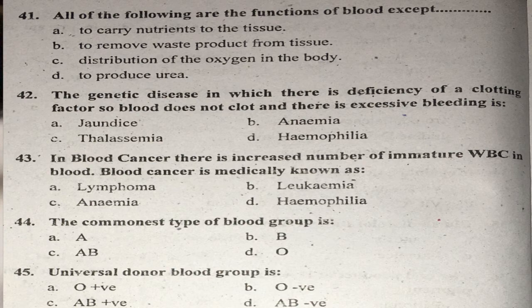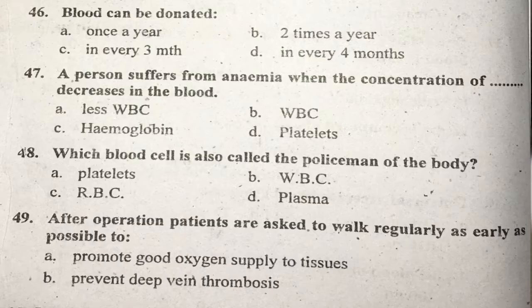Question forty-four: The commonest type of blood group is what? Right answer is D. Question forty-five: The universal donor blood group is O negative. Right answer — O negative.